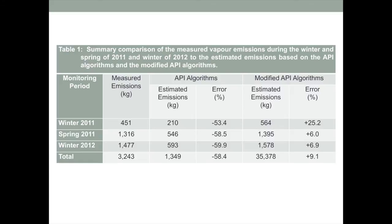When we took our modified algorithm, we estimated the working losses using a similar approach to the API algorithm, but without applying their activity factor — assuming full saturation instead — which gave a slightly different number. We also added in the contribution that results from fresh air coming in and promoting vapor growth within the tank. When we added our algorithm in, it brought the total up to 564 kilograms — we overstated emissions by 25%, but we came closer to the actual number than API did, and we were at least conservative in doing that.